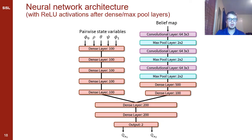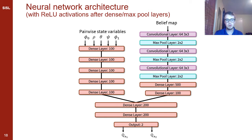The neural network is composed of layers with linear functions and ReLU nonlinear activations. We have two input modalities: low-dimensional state variables such as position, heading direction, and bank angles of both aircraft, as well as the belief map image. These are fed into separate input branches of the network before being concatenated and producing a final output. Through training, we update the network's weights so that it produces well-performing Q-value estimates.